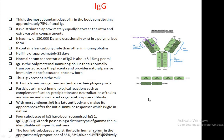IgG has a molecular weight of 150,000 daltons and occasionally exists in a polymerized form. It contains less carbohydrate than other immunoglobulin molecules. IgG has a half-life of approximately 23 days, and the normal serum concentration of IgG is about 8 to 16 mg per ml.